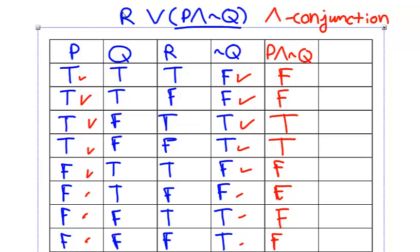So we're almost finished. Now what I'm going to do is evaluate the statement R or P and not Q by comparing the truth values of R with the truth values of this compound statement P and not Q. Now, because this symbol right here is an or statement, also known as a disjunction, it's going to be true in all cases except when both R and P and not Q are false.